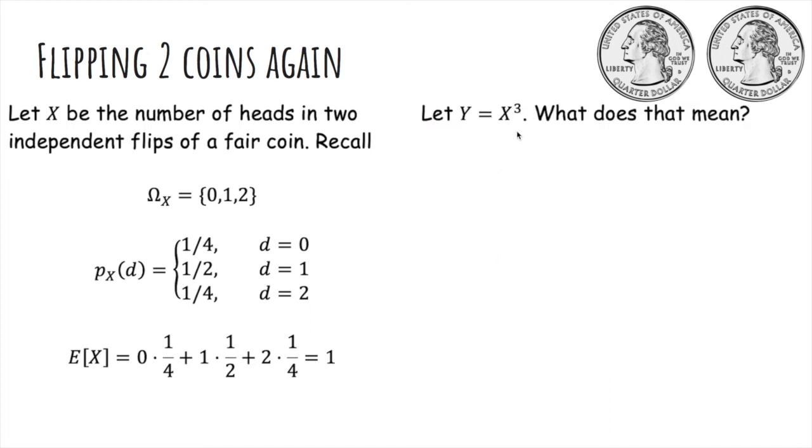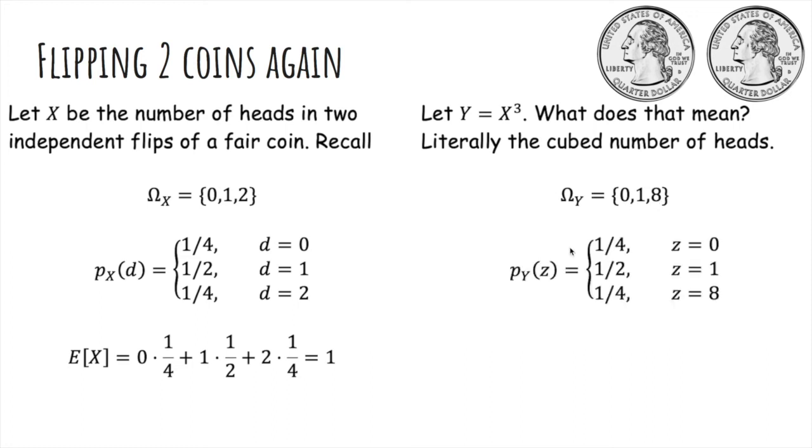Let y equals x cubed. What does this even mean? Well, it literally means the cubed number of heads. So the range of y is just 0, 1, or 8, because you either have 0, 1, or 2 cubed heads. And the probability mass function of y is 1 fourth on 0, 1 half on 1, and 1 fourth on 8.